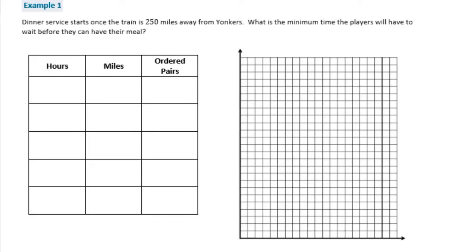Example 1: Dinner service starts once the train is 250 miles away from Yonkers. What is the minimum time that the players will have to wait before they can have their meal? Okay, so once they're 250 miles away they get food.